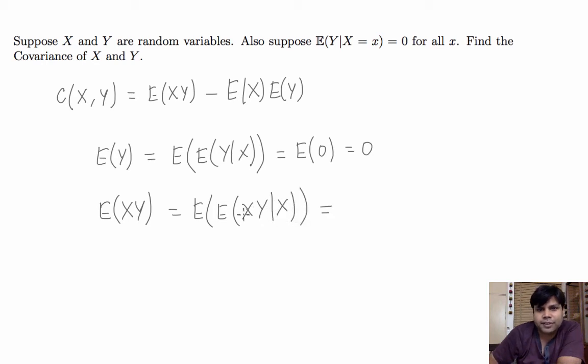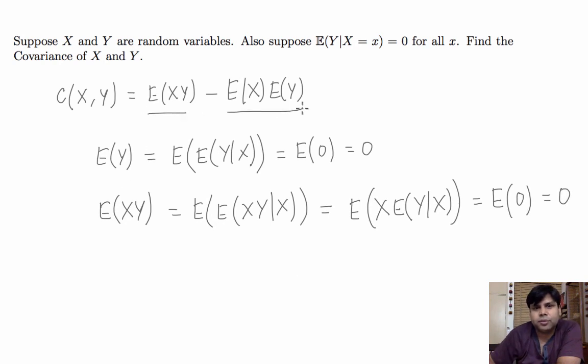So, given X, X is actually a constant, so X is going to come out and we get expected value of X times expected value of Y given X. Since expected value of Y given X is 0, we get expected value of 0 again. So this is 0, meaning this term is 0 and this term is also 0.